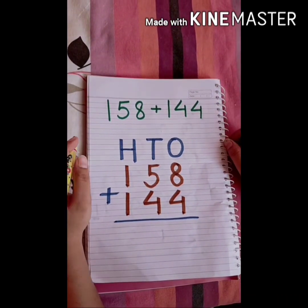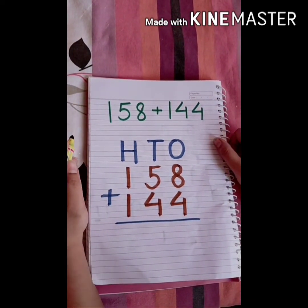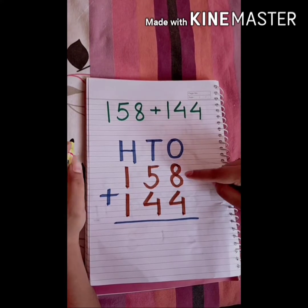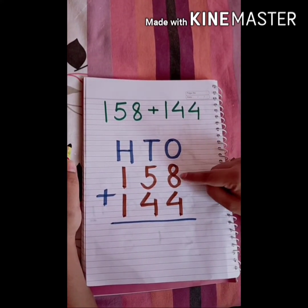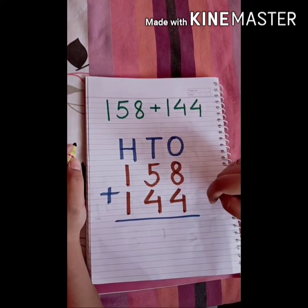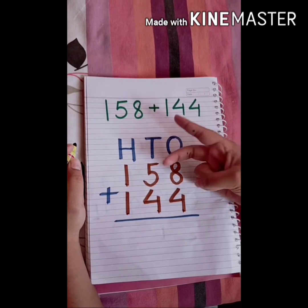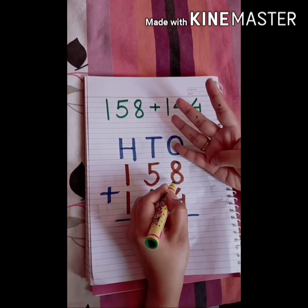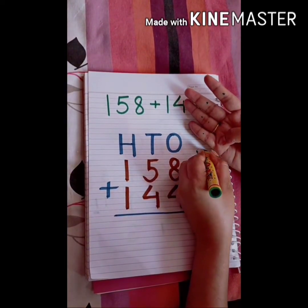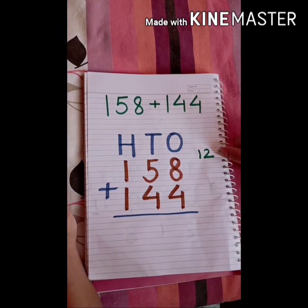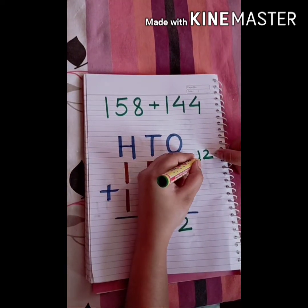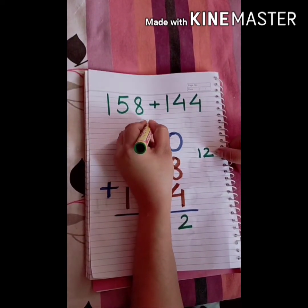Let's start with another example. I've already placed the numbers according to their positions. Starting with the ones digit: 8 plus 4. The larger number is 8, so we keep 8 in mind and count 4 on our fingers — nine, ten, eleven, twelve. We got 12, which is more than 9.